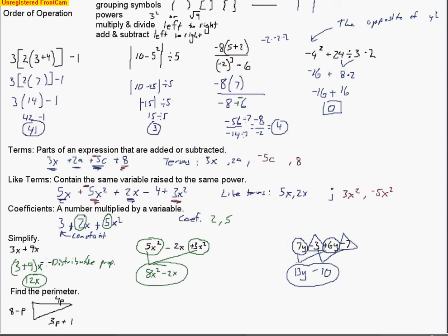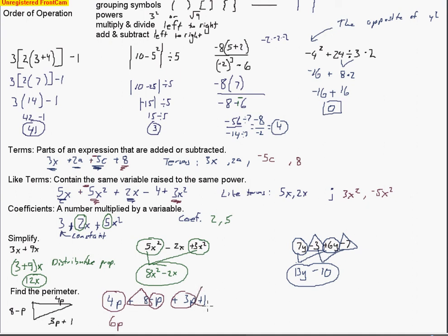The last type of problem you'll see might be a geometry word problem. If we find the perimeter, we're counting up the distance around the shape — and what we're doing is combining like terms. We've got 4p, then add 8 minus p, then add 3p plus 1. Combining the p terms: 4p minus 1p plus 3p gives 6p. Then combining the constants: 8 plus 1 gives 9. So the perimeter of this triangle is 6p + 9.